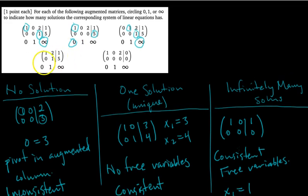The fourth augmented matrix has two pivots. It's consistent and there are no free variables, so there's one unique solution.